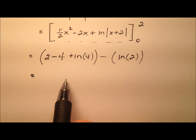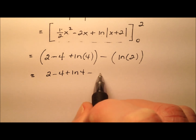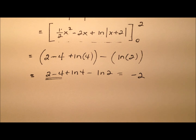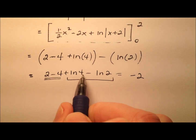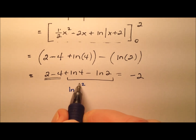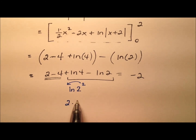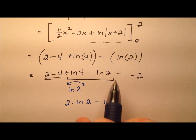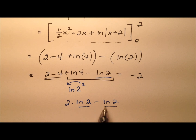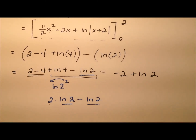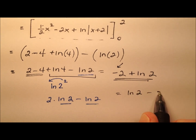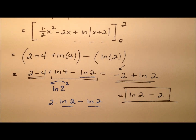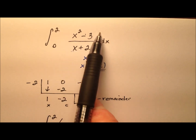Removing the parentheses, we have 2 minus 4 plus the natural log of 4 minus the natural log of 2. The 2 minus 4 gives negative 2. For the logarithms, we rewrite the natural log of 4 as the natural log of 2 squared, and bring the exponent out front as a coefficient: 2 times the natural log of 2 minus the natural log of 2. These are like terms, giving us plus the natural log of 2. So our final answer is the natural log of 2 minus 2.